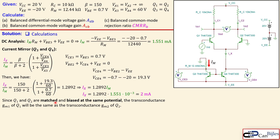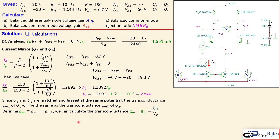Since Q1 and Q2 are matched and biased at the same potential, their transconductances are equal: gm1 = gm2 = gm. For the gm calculation, only Q1 and Q2 are considered — Q3 and Q4 serve solely to supply the tail current. In symmetry, each transistor carries half of IX as its emitter current.